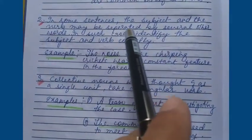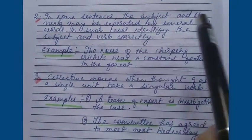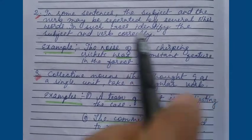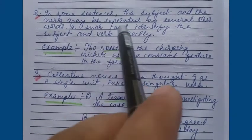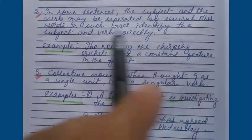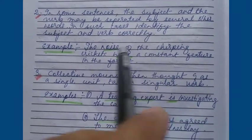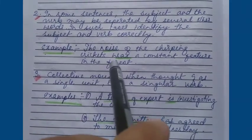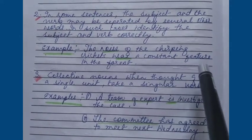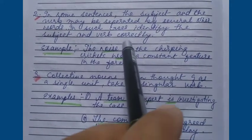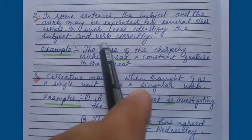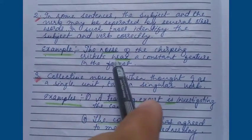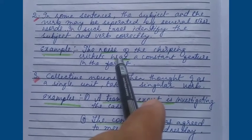Rule 2: In some sentences, the subject and the verb may be separated by several other words. In such cases, identify the subject and verb correctly. Example: 'The noise of the chirping crickets was a constant feature in the forest.' Here the subject is 'noise' and it is a singular subject, that is why it takes a singular verb.